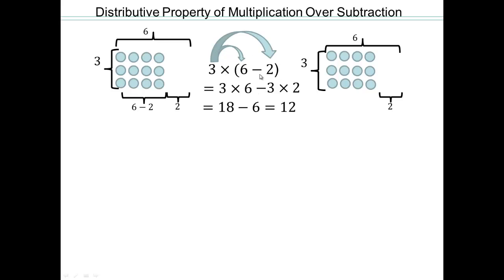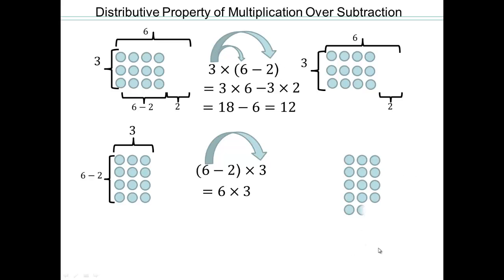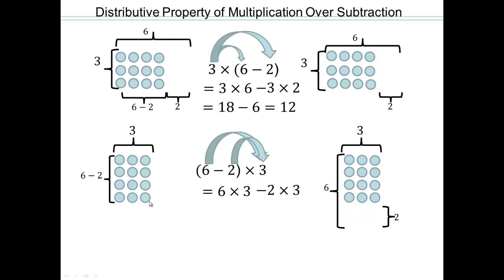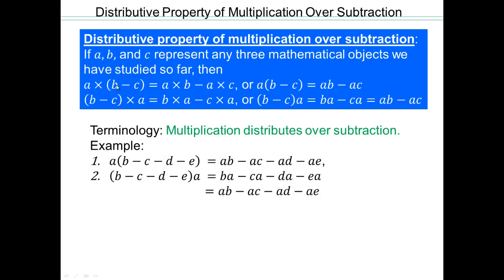Multiplication distributes over subtraction and also addition. For (6 minus 2) times 3: that's 4 rows of 3, or 6 rows of 3 minus 2 rows of 3, giving 18 minus 6 equals 12. So the distributive property of multiplication gives us A times (B minus C) equals AB minus AC. Multiplication distributes over subtraction whether you have two terms, three terms, or four terms — you just multiply each term individually.